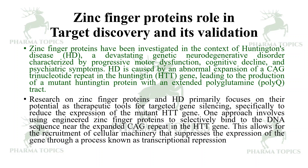Research on zinc finger proteins in Huntington's disease primarily focuses on their potential as therapeutic tools for targeted gene silencing, specifically to reduce the expression of the mutant HTT gene. One approach involves using engineered zinc finger proteins to selectively bind to the DNA sequence near the expanded CAG trinucleotide repeat in the HTT gene, allowing for recruitment of cellular machinery that suppresses gene expression through a process known as transcriptional repression.